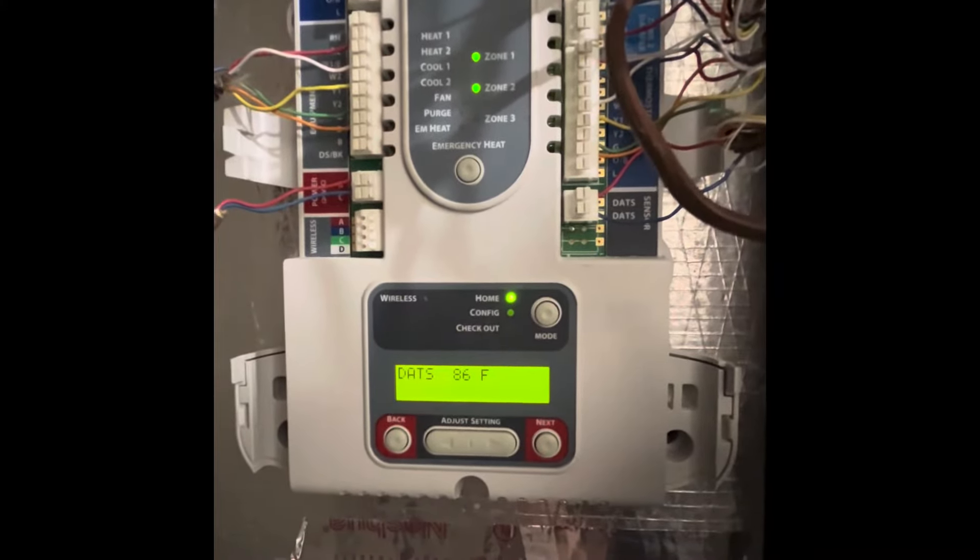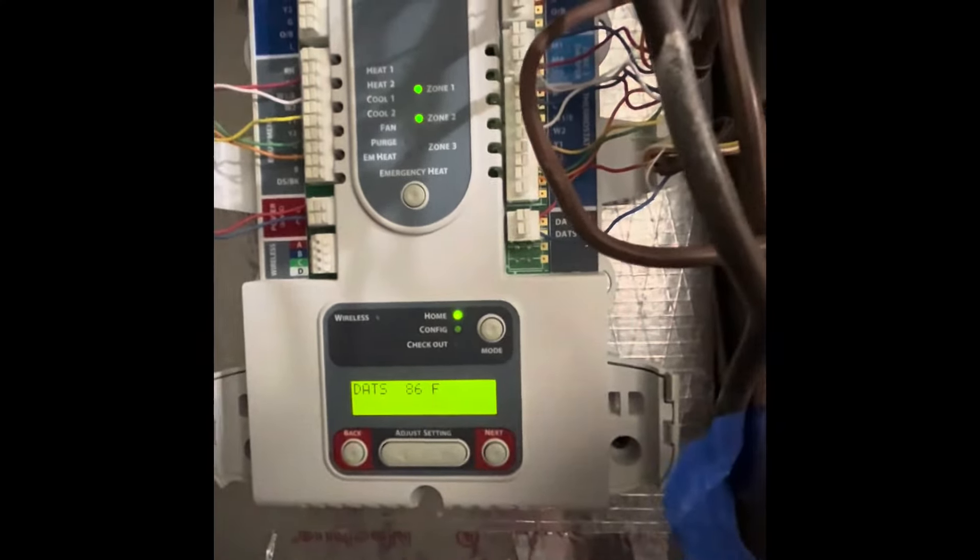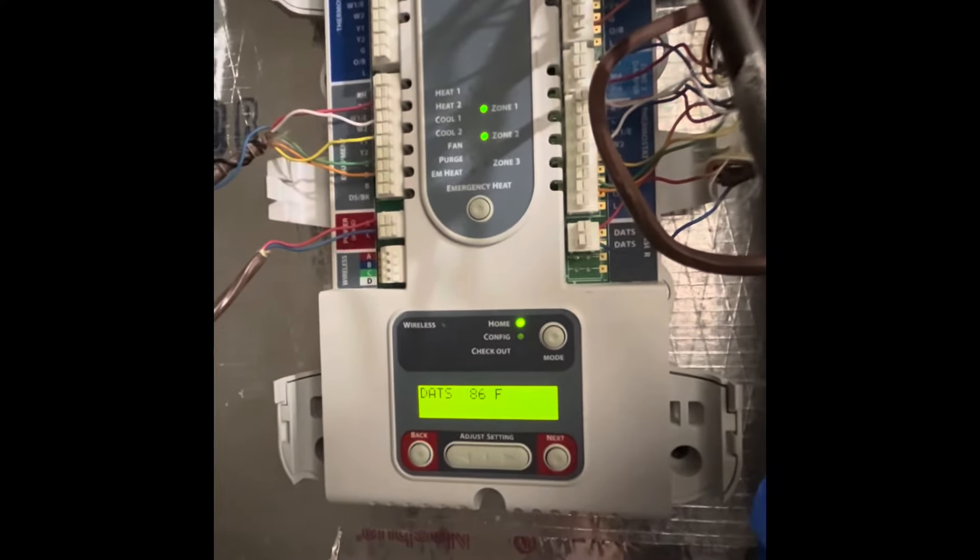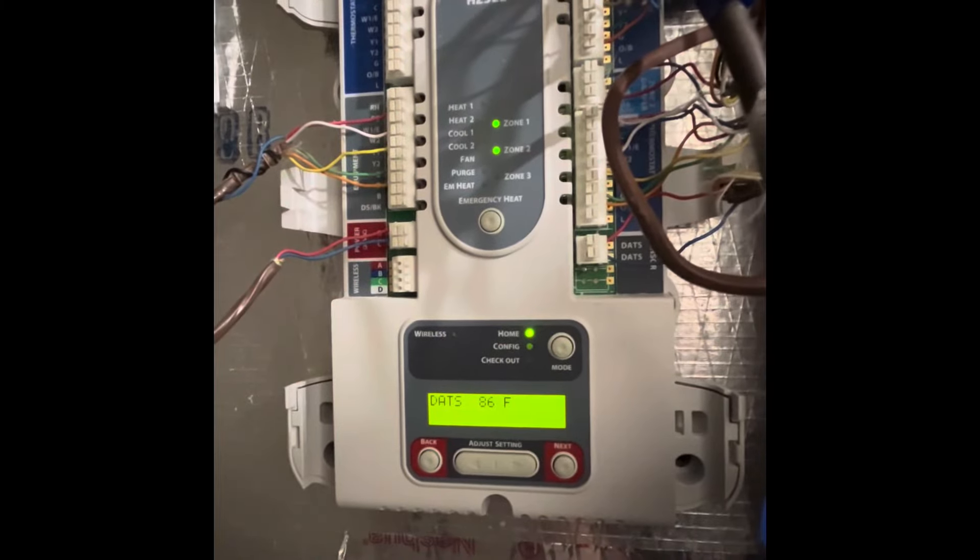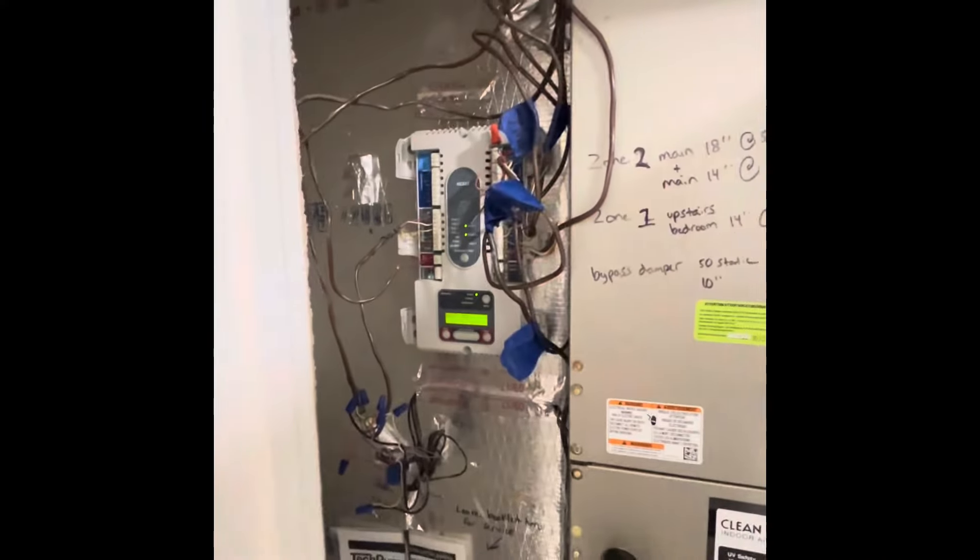So if you do want to bypass it, just unhook it. Pull these two wires out. It'll say 'DATS not present' and your system will run fine. You don't even have to bother hooking up a new sensor. That is the most common problem with a Honeywell zone panel.